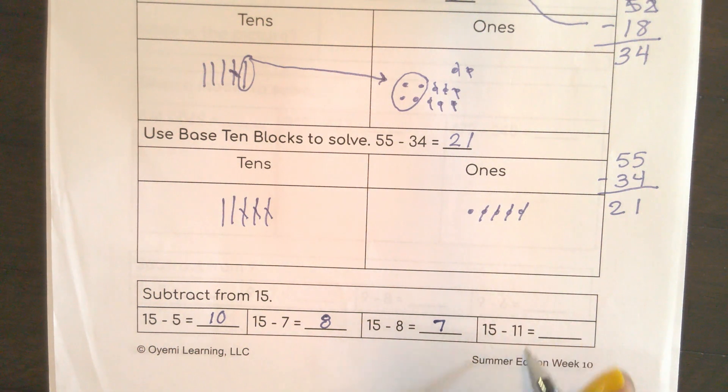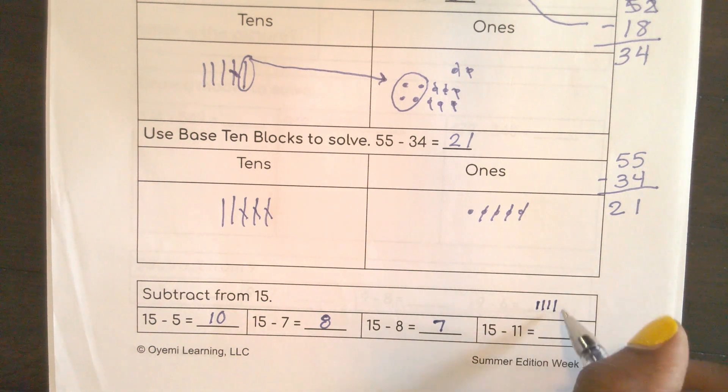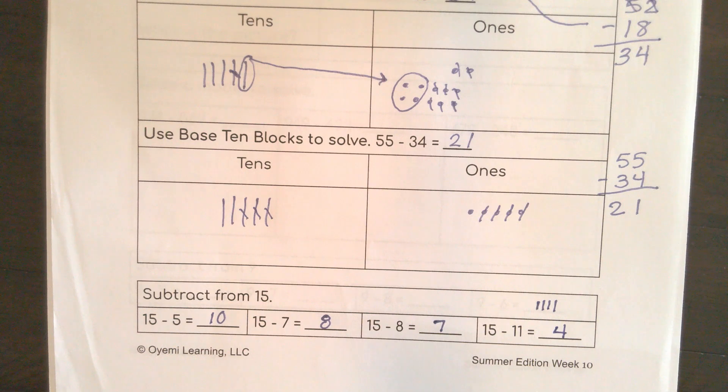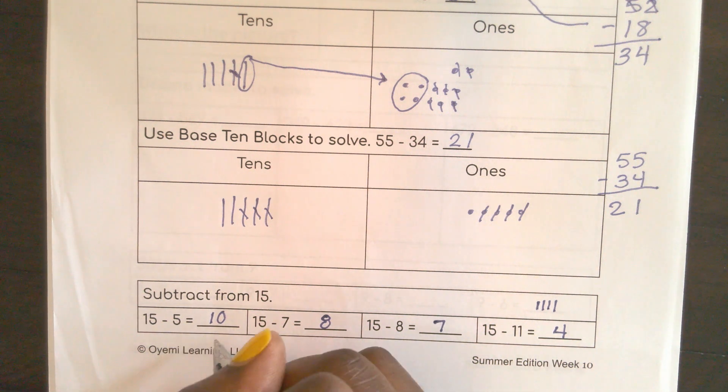Now, this is close enough to 15 that I could technically count up. If I wanted to use the count on strategy, I could. So I could do 11, 12, 13, 14, 15. How many did it take for me to get to 15 from 11? 4. 11 plus 4 is 15. 8 plus 7 is 15. 7 plus 8 is 15. And 5 plus 10 is 15. Excellent work.